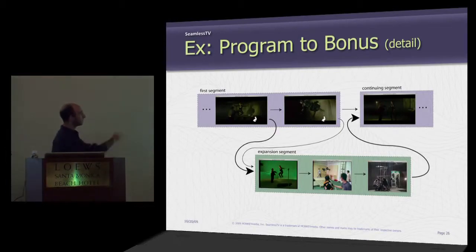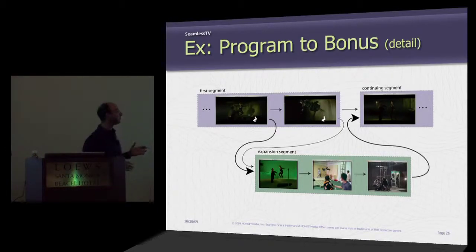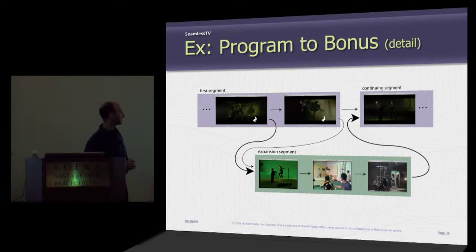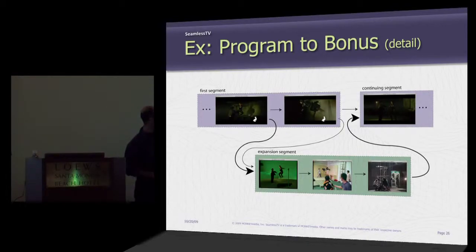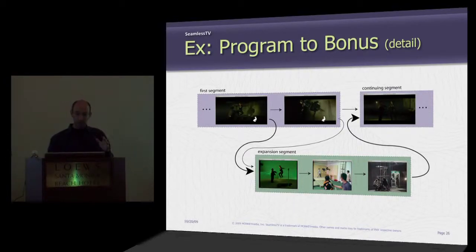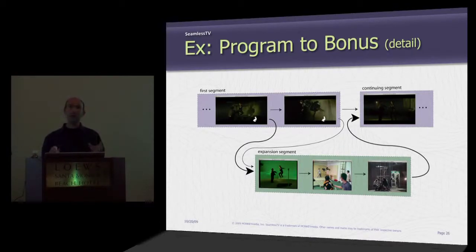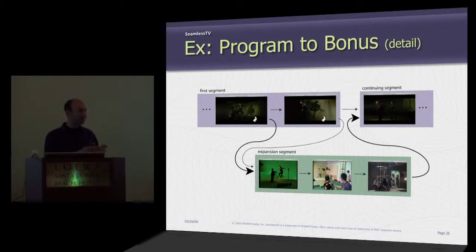Let's take a look at how this works. We have in purple across the top the main movie, and we get to a point where there's the white rabbit — the affordance for linking out to the expansion. At any point that we click, we come out, we can watch the expansion, and when it's done it picks up again with a continuing segment. The DVD spec talked about seamless branching, which is the ability to link from one piece of video to another. What is unique here in the Monkey Media patents is the pairing of a link out with a link back, which makes it an expansion and keeps the optional content in the context of the original video.